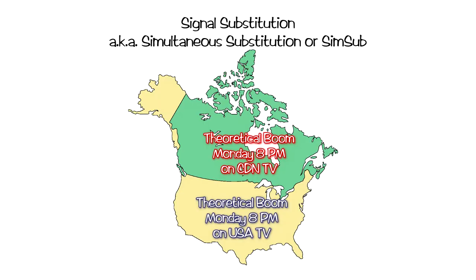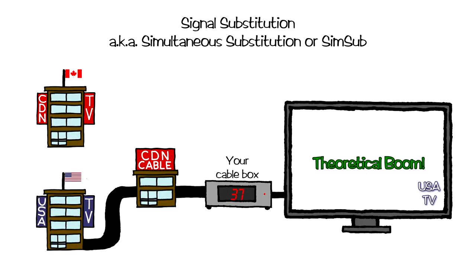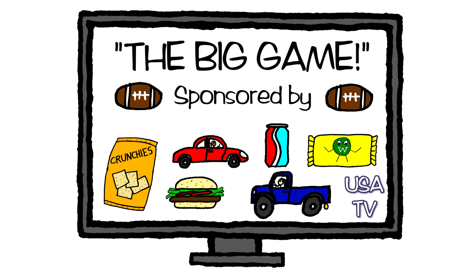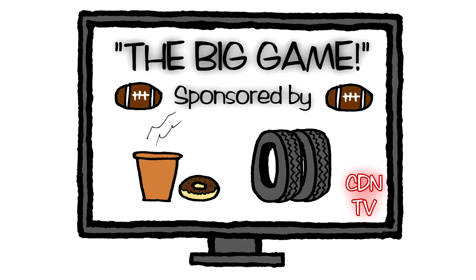When an American television show is broadcast simultaneously in both Canada and the United States, Canadian cable providers will substitute the American cable signal you're currently watching with a Canadian cable signal without changing the channel on your cable box. The content remains the same, but the advertising is Canadian instead of American.